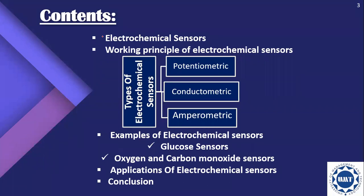First of all, I would like to tell you the contents of my presentation, which include electrochemical sensors, working principle of electrochemical sensors, then types — first is potentiometric, second is conductometric, and the third one is amperometric. Then examples of some important electrochemical sensors, for example glucose sensors, oxygen and carbon monoxide sensors. Then there are applications, and at last I will discuss the conclusion of my presentation.